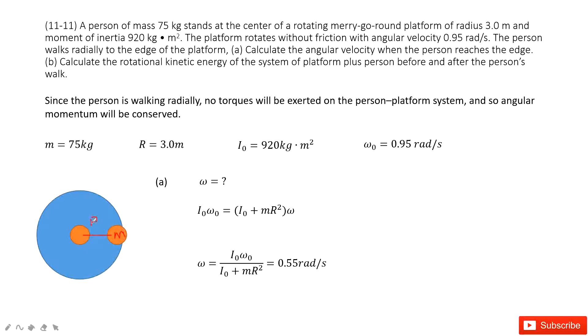M times R squared and then times the final angular velocity. In this one, we can say we get the function for angular velocity at the final. And then we can input the known quantities and get the final answer there.